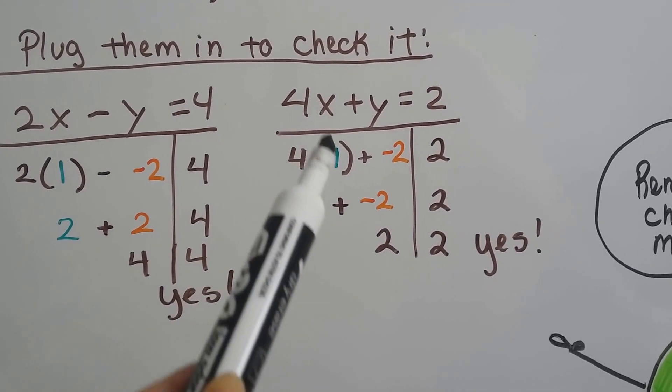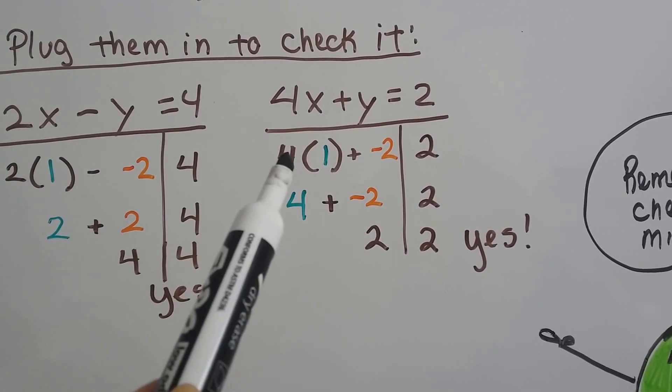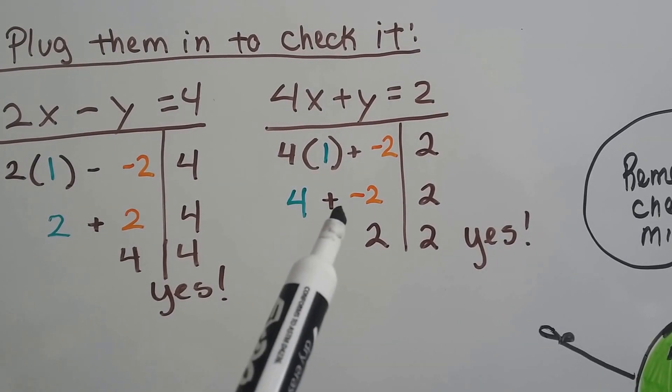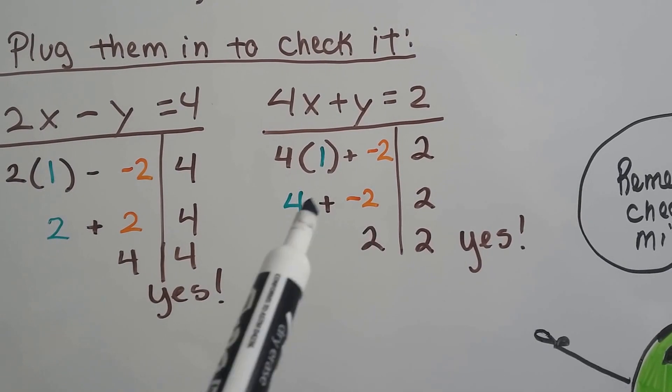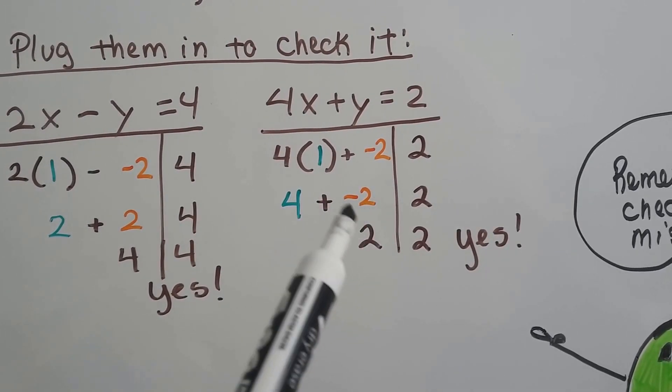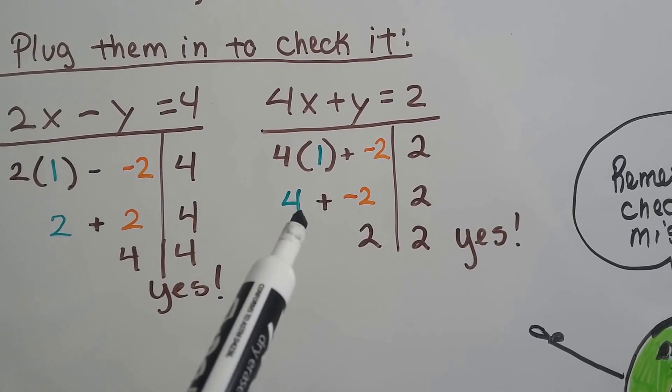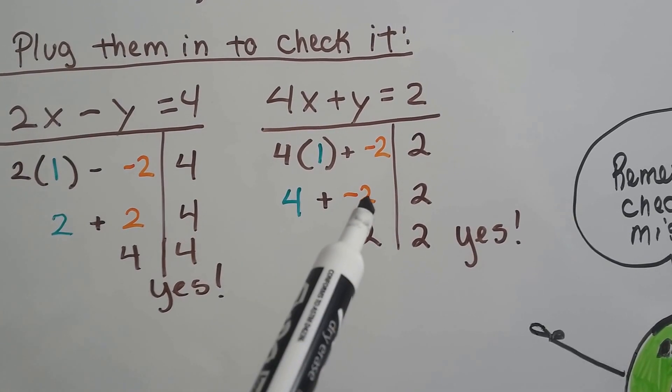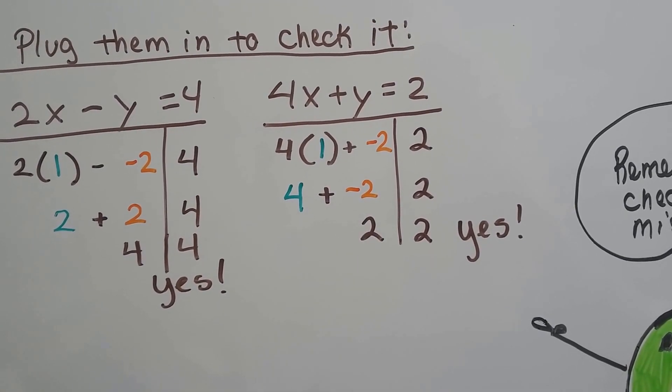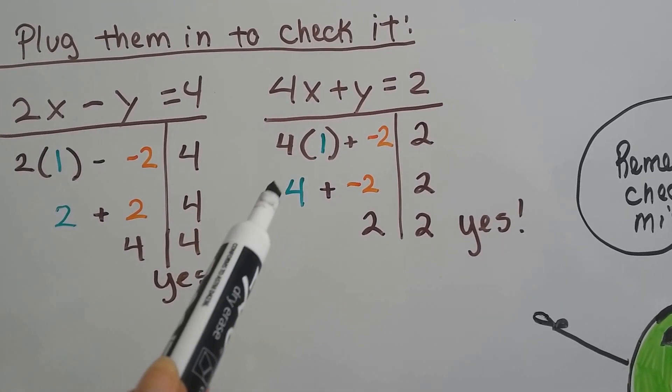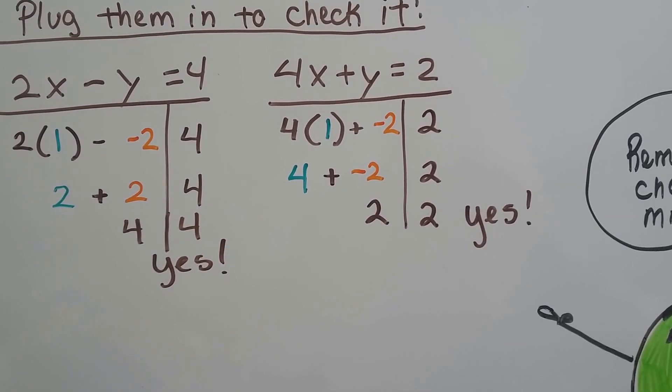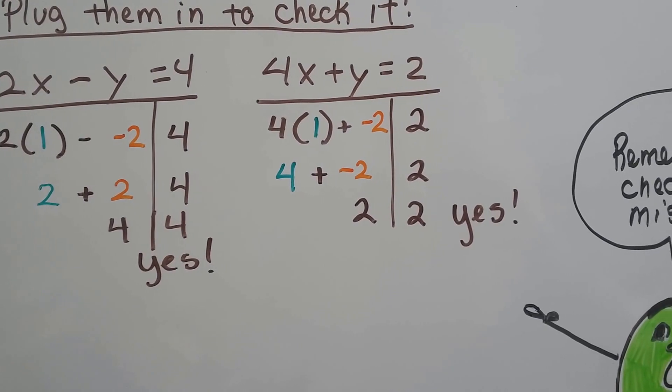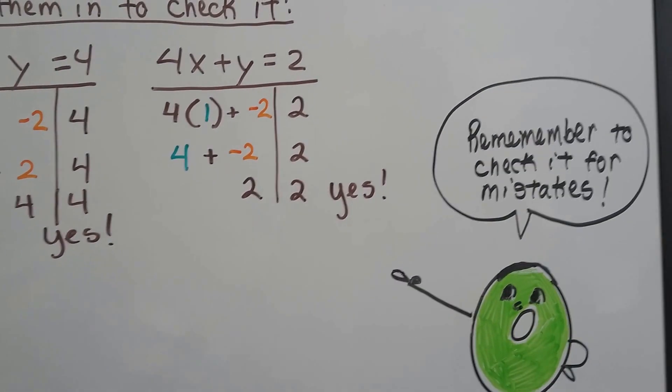So now we've got x for 1 and -2 for y. We've got 4 times 1 is 4 plus a negative 2. So here we're going to find the difference. Because the signs are different, we find the difference. The difference between 4 and the absolute value of 2 is 2. And we take the sign of the greater value. The 4 is bigger, so it's positive. So 2 = 2, yes. Just remember to check it for mistakes.